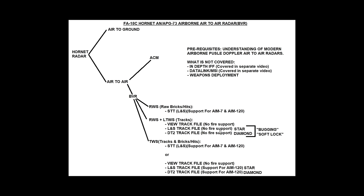The designator for L&S will be a star — so just remember: star is launch and steering. In addition to that we can have a DT-2, a designated target 2, a secondary target. The L&S is always the primary, the DT-2 is always the secondary. We cannot fire weapons on DT-2, and its designation sign is a diamond.